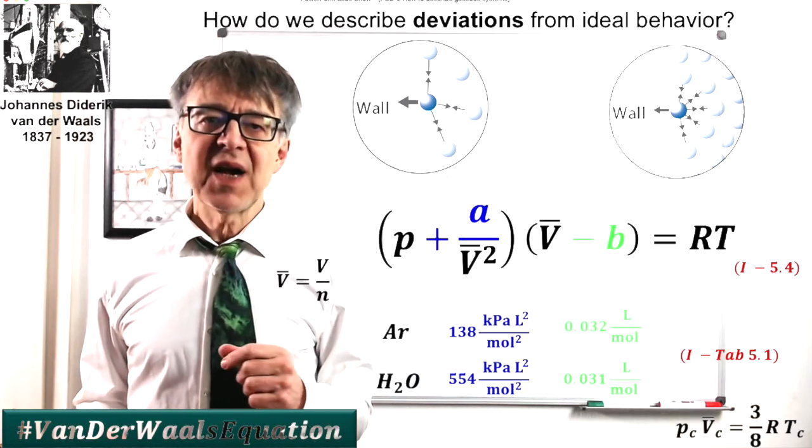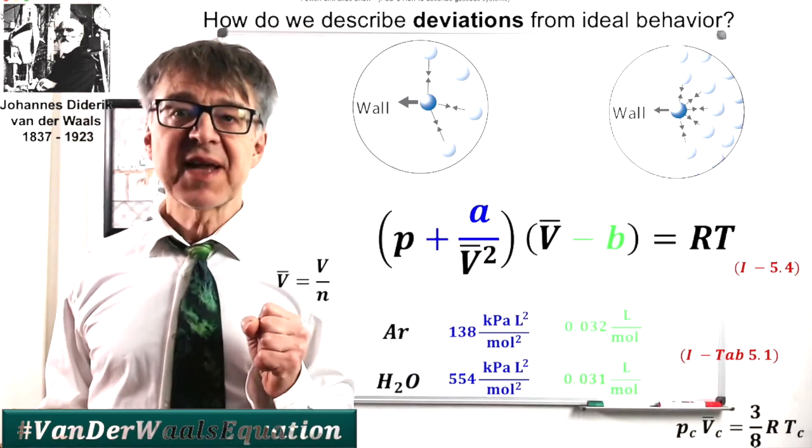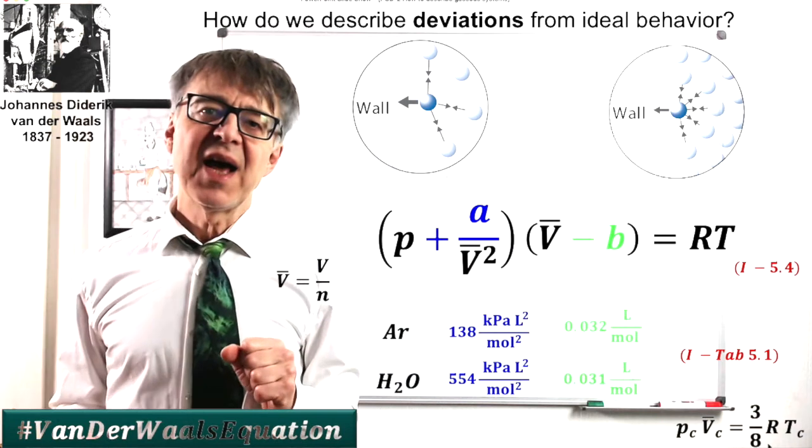The van der Waals factors A and B can be obtained from the critical values. In fact, gas is only 3/8 ideal at the critical point.